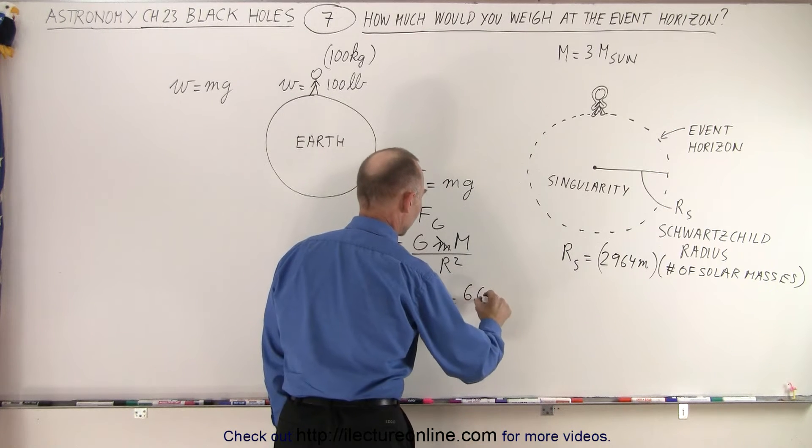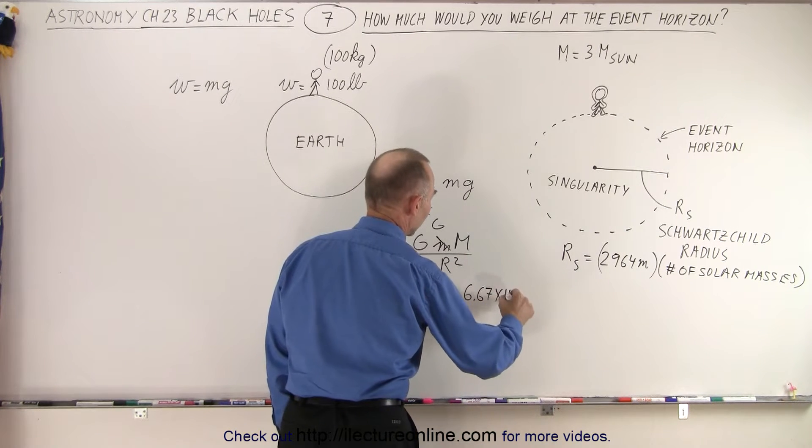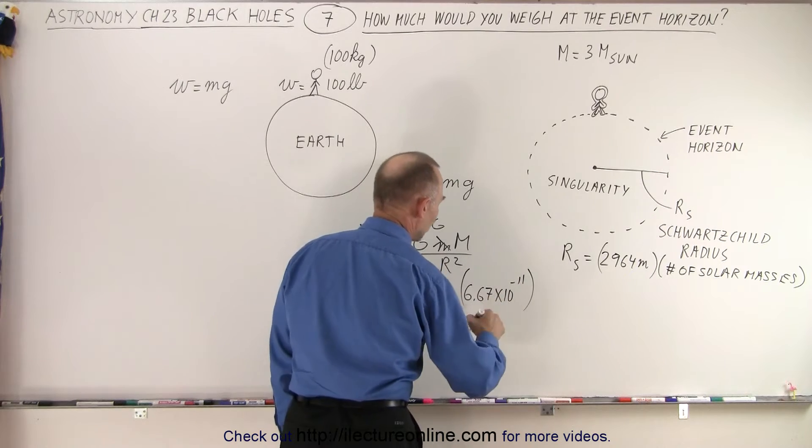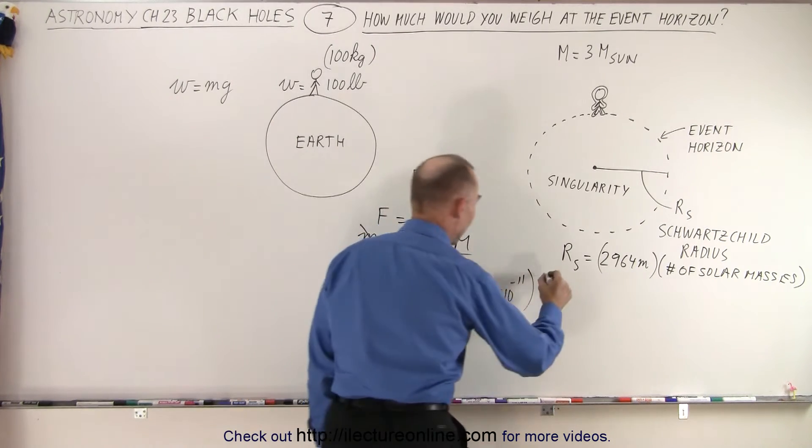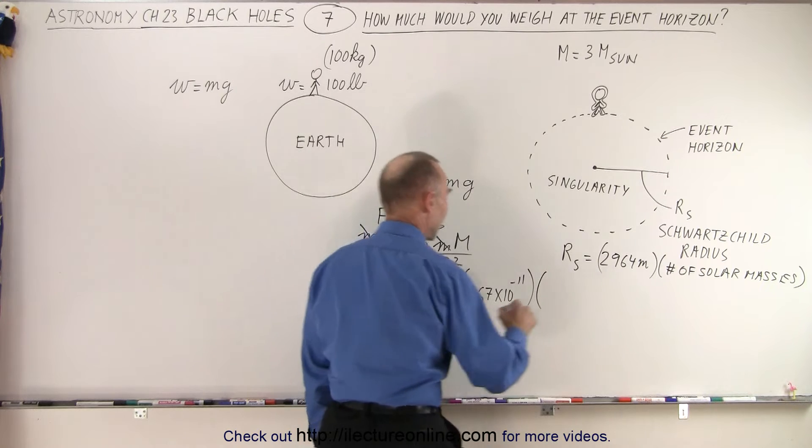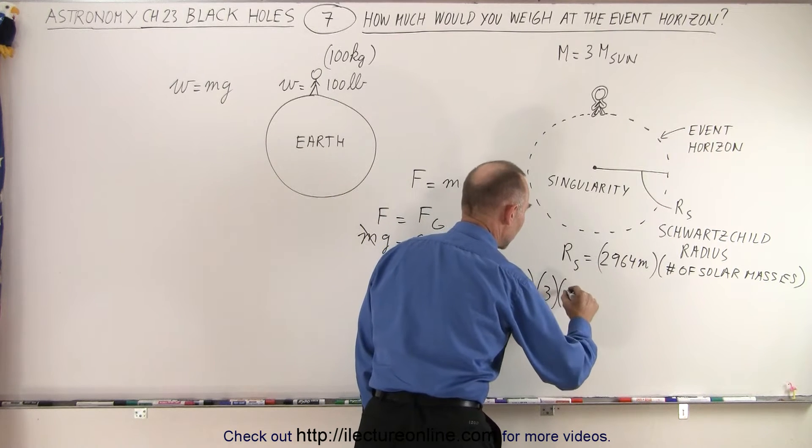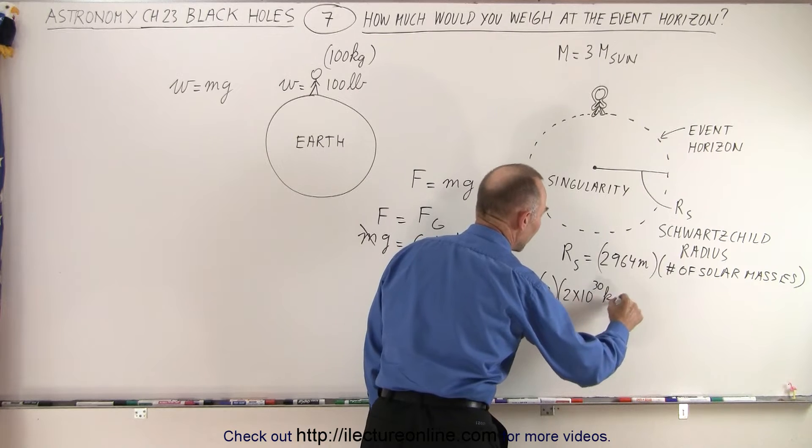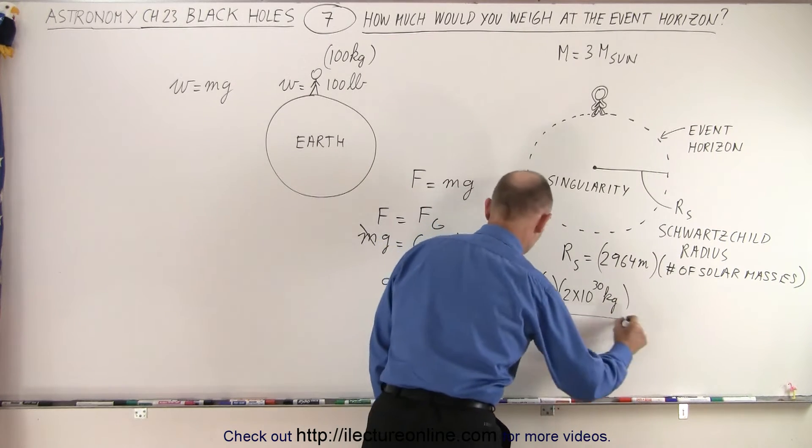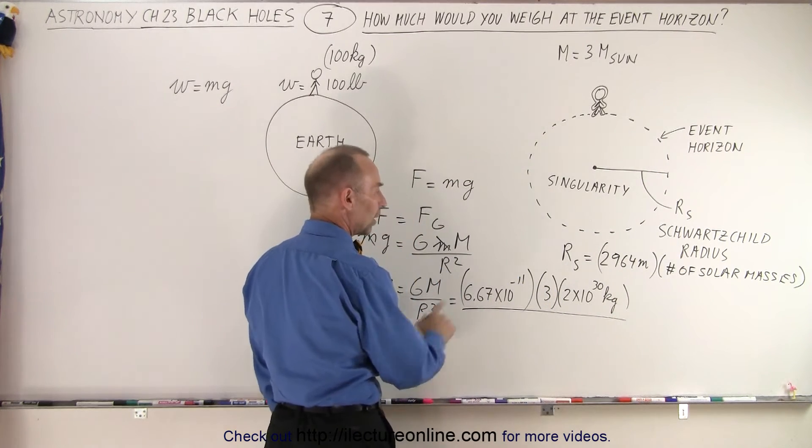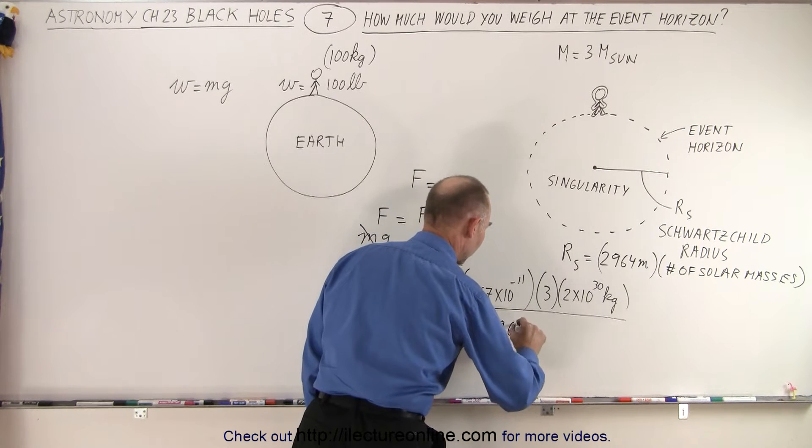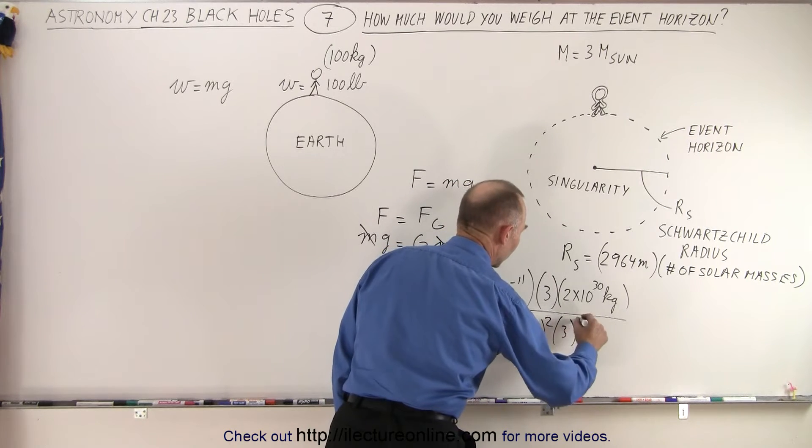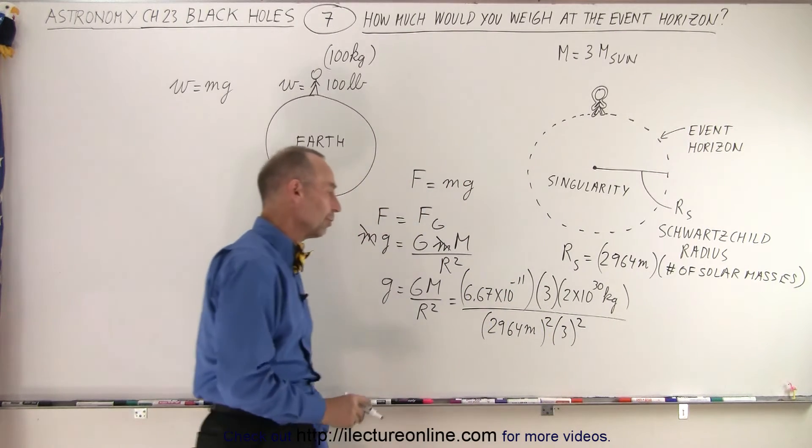So this is 6.67 times 10 to the minus 11, of course, that would be Newton meters squared per kilogram squared, times 3 times the mass of the sun, that would be 2 times 10 to the 30th kilograms for the mass of the sun times 3, divided by the Schwarzschild radius squared, which would be 2,964 meters. We would have to square that, and we have to square 3 because there's three solar masses.